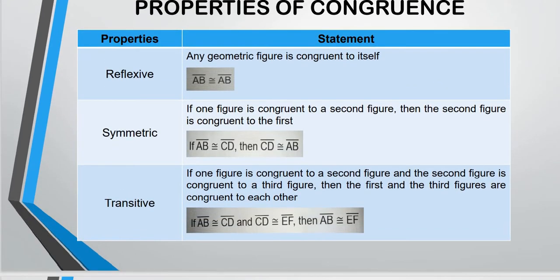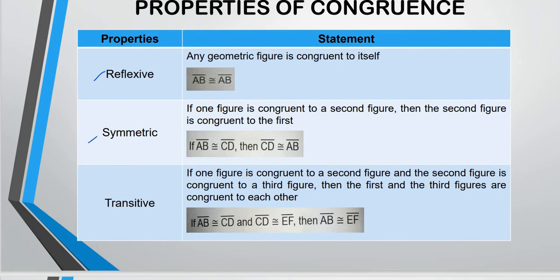Here are some of the properties of congruence. We have reflexive, symmetric, and transitive. So any geometric figure is congruent to itself. Meaning that it is the same. It is reflexive. So AB is, this is how we denote, we write down the reflexive properties. AB dash, here, the symbol, and then AB dash.